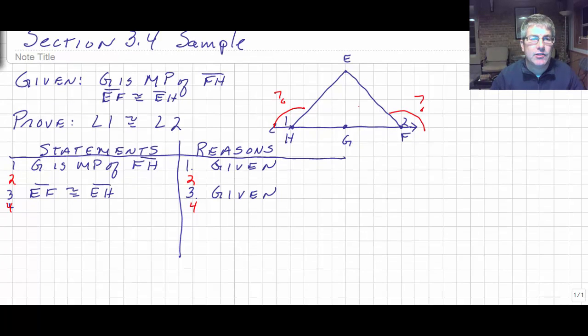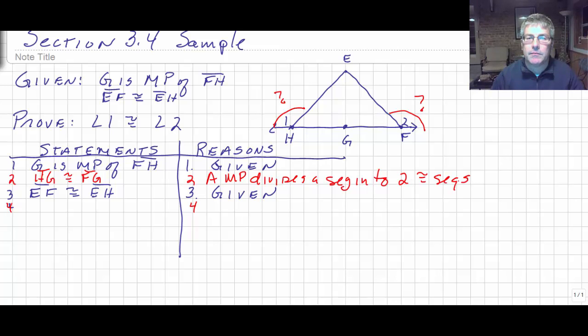So let's see how we can manage this one. Well, we're given G is the midpoint of FH. So then we must know that HG is congruent to FG. And we would say midpoint divides the segment into two congruent segments. And then we are given that EF is congruent to EH. Better mark my diagram here.